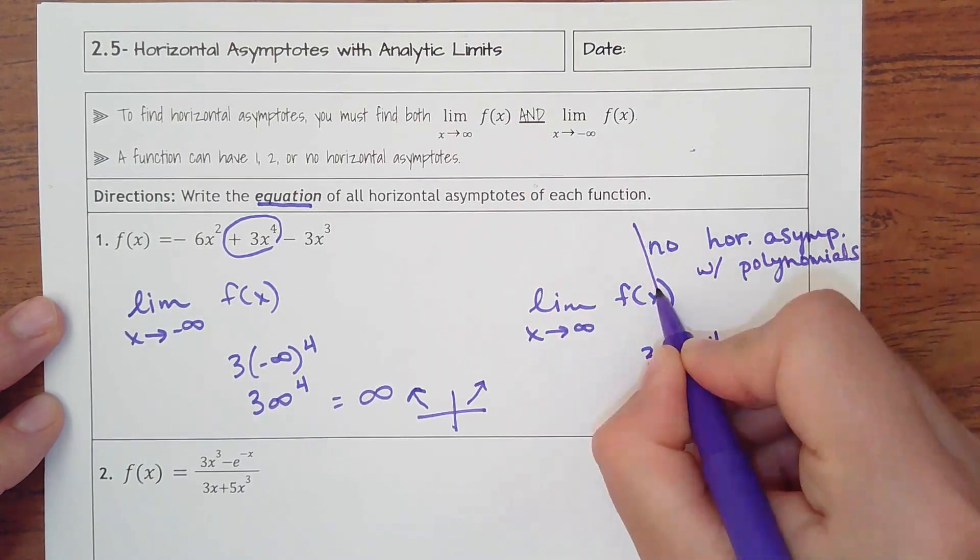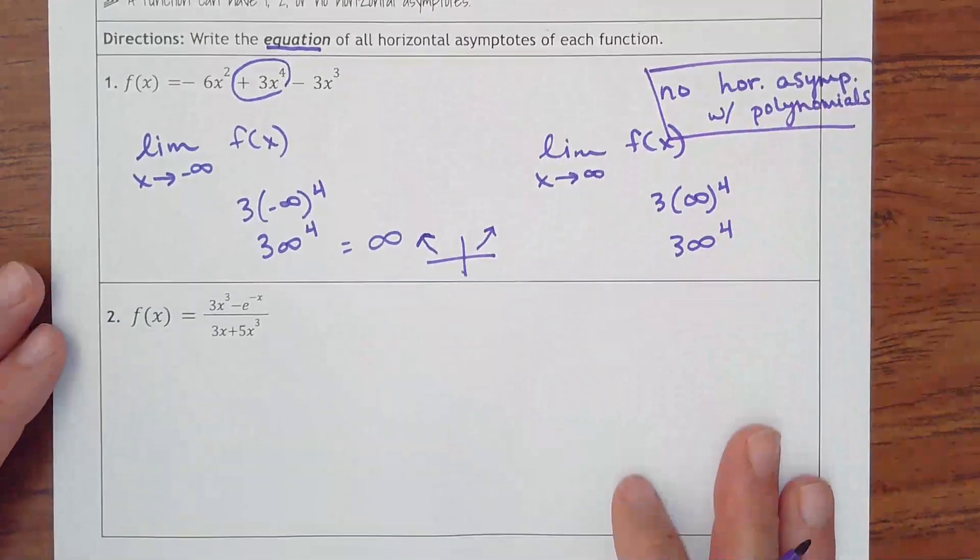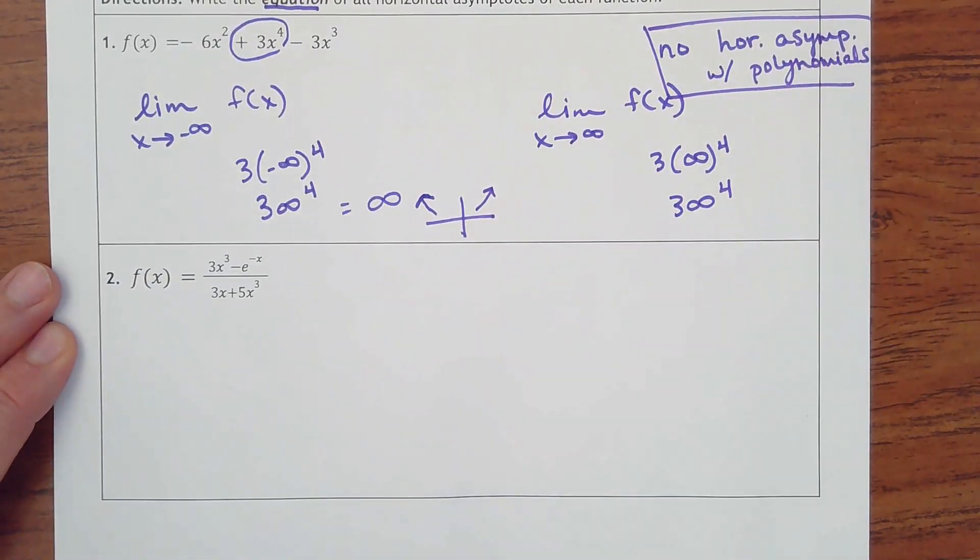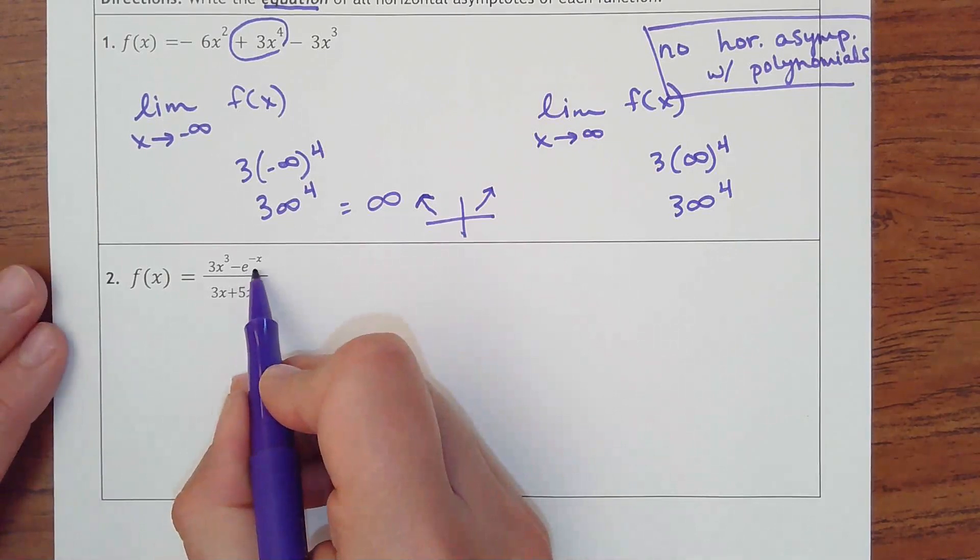Ends either go up or they go down. All right, let's try one more. This is a rational function, but be careful because it has e.